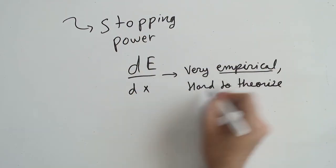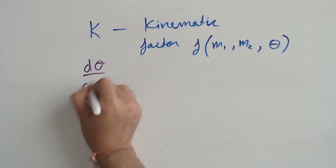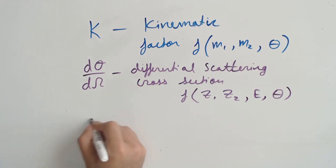Okay, let's recap the past few explanations. We have the kinematic factor, the differential scattering cross-section, and the stopping power.